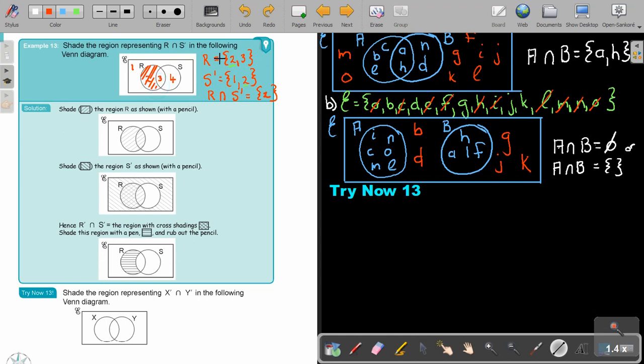So use the numbers. But don't use too many numbers. Just use one number for a specific region. Okay. Let's do the next. You can stop the video. And first do try now 13. And as soon as you are finished, you can continue the video. You can do either this method or the method with the numbers.